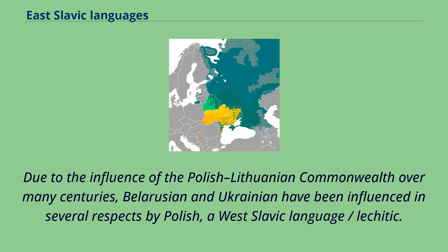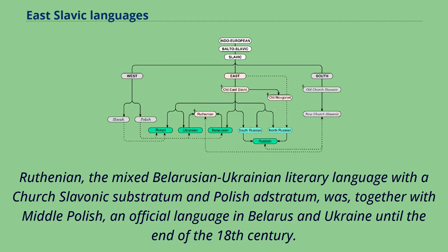Due to the influence of the Polish-Lithuanian Commonwealth over many centuries, Belarusian and Ukrainian have been influenced in several respects by Polish, a West Slavic language. Ruthenian, the mixed Belarusian-Ukrainian literary language with a Church Slavonic substratum and Polish adstratum, was, together with Middle Polish, an official language in Belarus and Ukraine until the end of the 18th century.